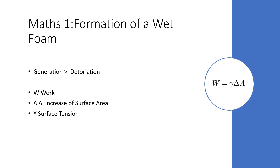Now we'll be taking a look at the formation of wet foams. In order to generate a foam, the generation of bubbles must be greater than the deterioration of bubbles. To work out how much work you need to do to generate foam, you would take the surface tension of the liquid and multiply that by the change in surface area.